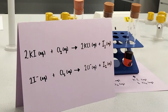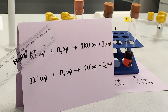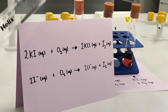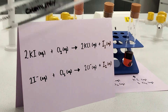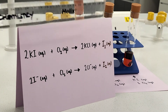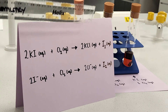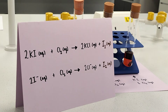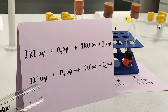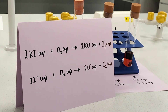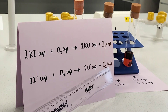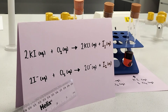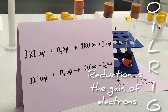Now for the displacement reaction between chlorine water and potassium iodide. The balanced equation is: 2KI + Cl2 → 2KCl + I2. Chlorine is more reactive than iodine, so it displaces iodine from the potassium iodide. The ionic equation explains the redox: iodide ions are oxidised — losing electrons to become uncharged iodine atoms in the I2 molecule — while chlorine atoms in Cl2 are reduced, gaining electrons to become negatively charged chloride ions.